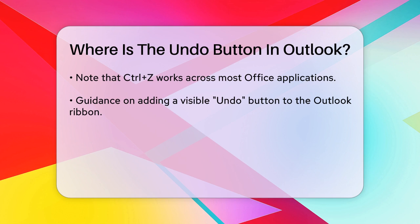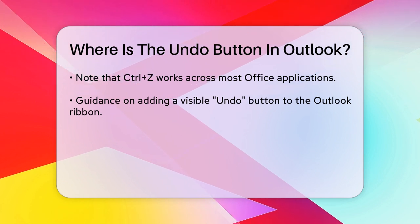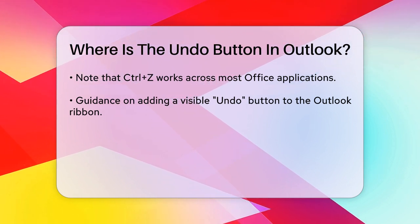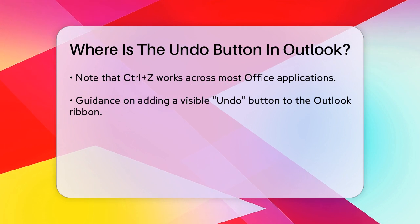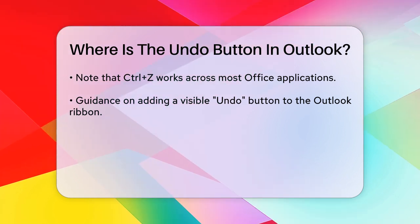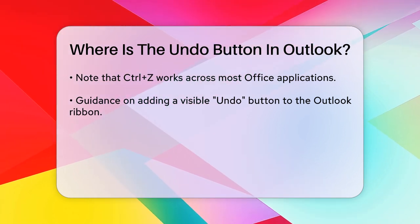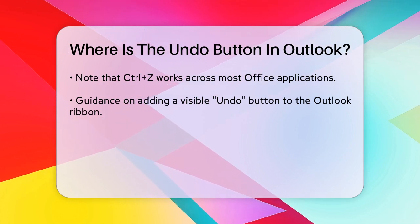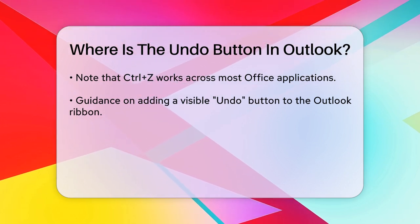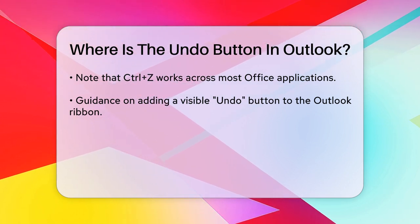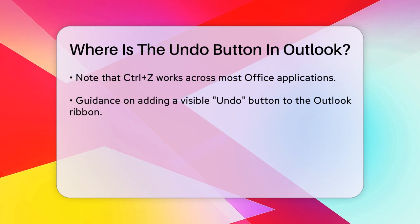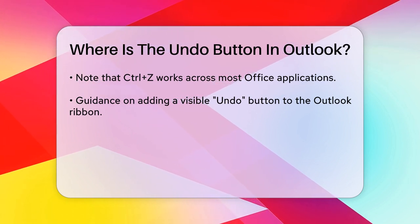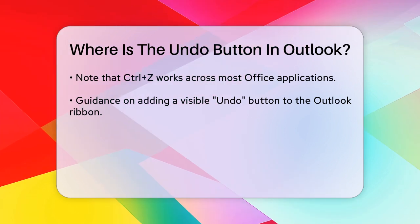Now, if you're looking for a more general undo button for actions within Outlook, such as deleting emails or moving them to different folders, you can use the keyboard shortcut Ctrl+Z. This shortcut works across most Office applications, including Outlook. Simply press Ctrl+Z to undo your last action, and you can press it repeatedly to undo multiple actions.